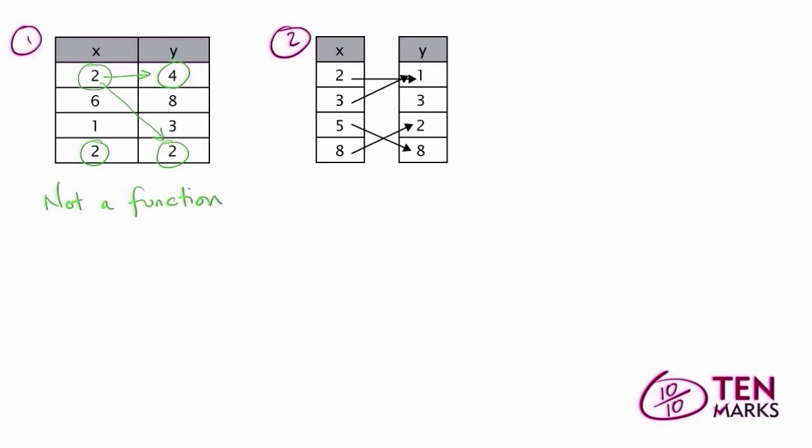Now let's take a look at the mapping diagram. Again, remember, when the arrow points to the y value here, that means that when x equals 2, y equals 1. When x equals 3, y equals 1. When x equals 5, y equals 8. And when x equals 8, y equals 2.